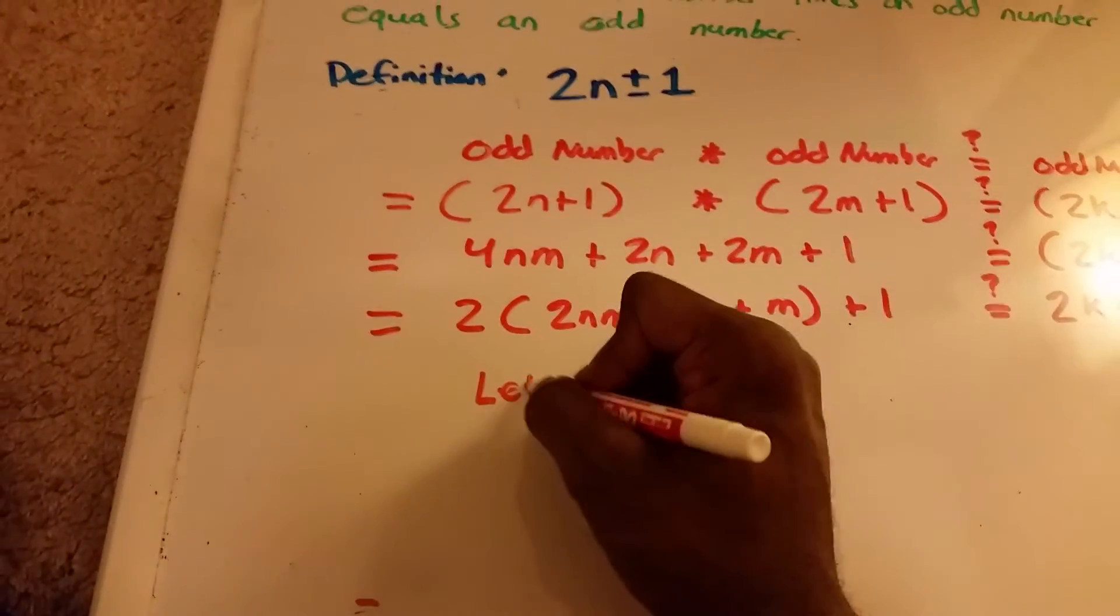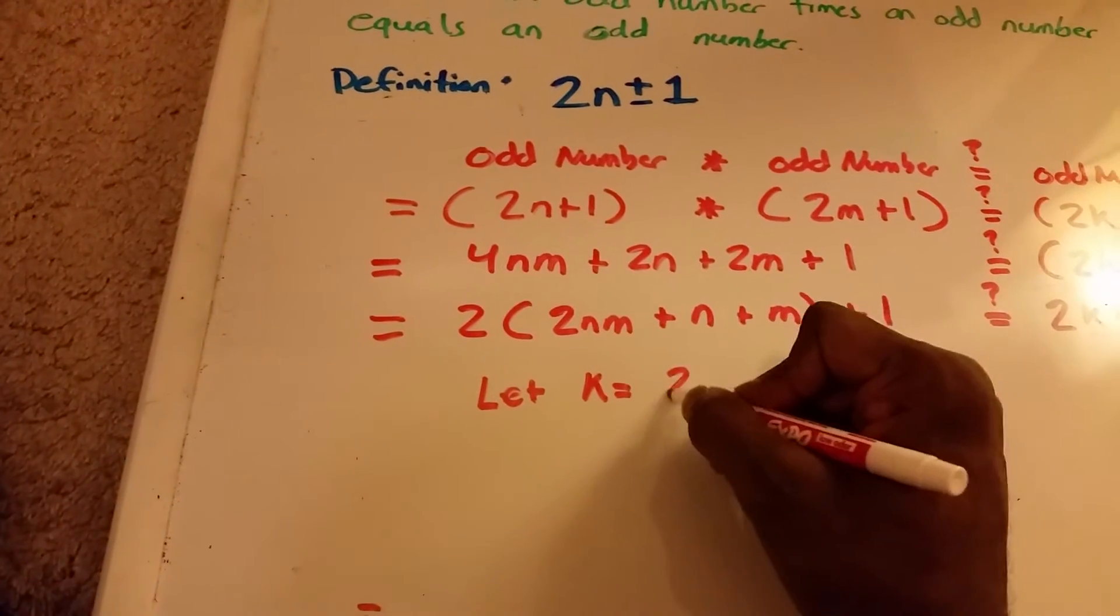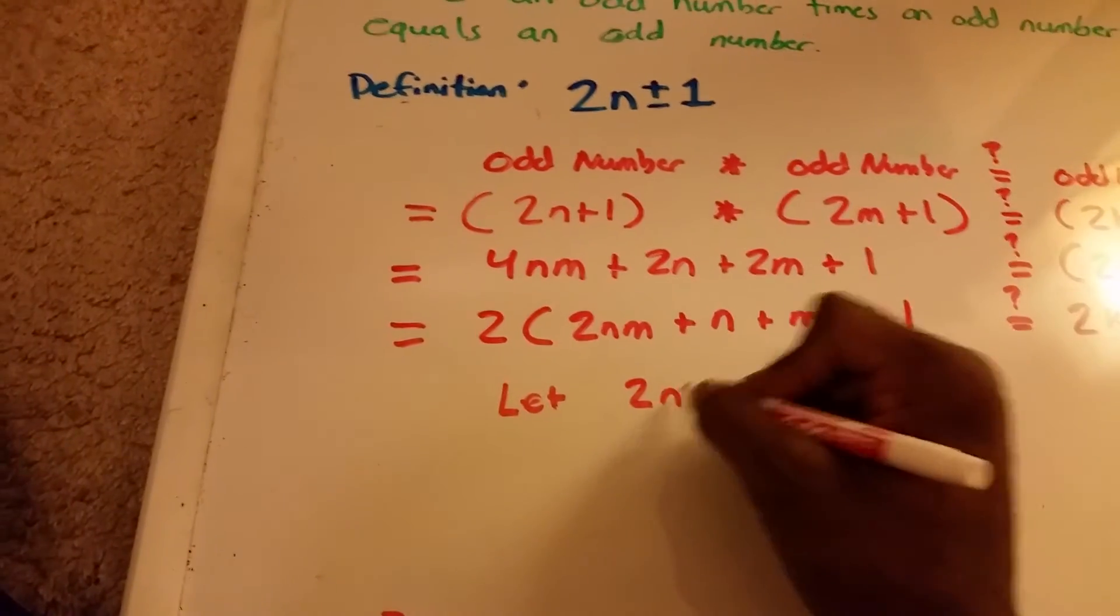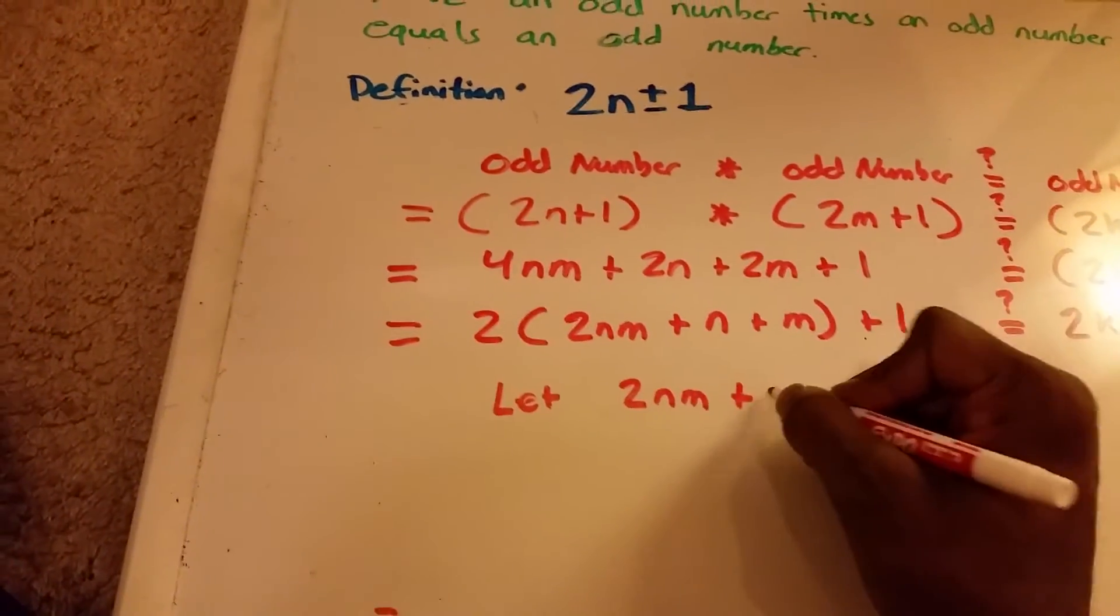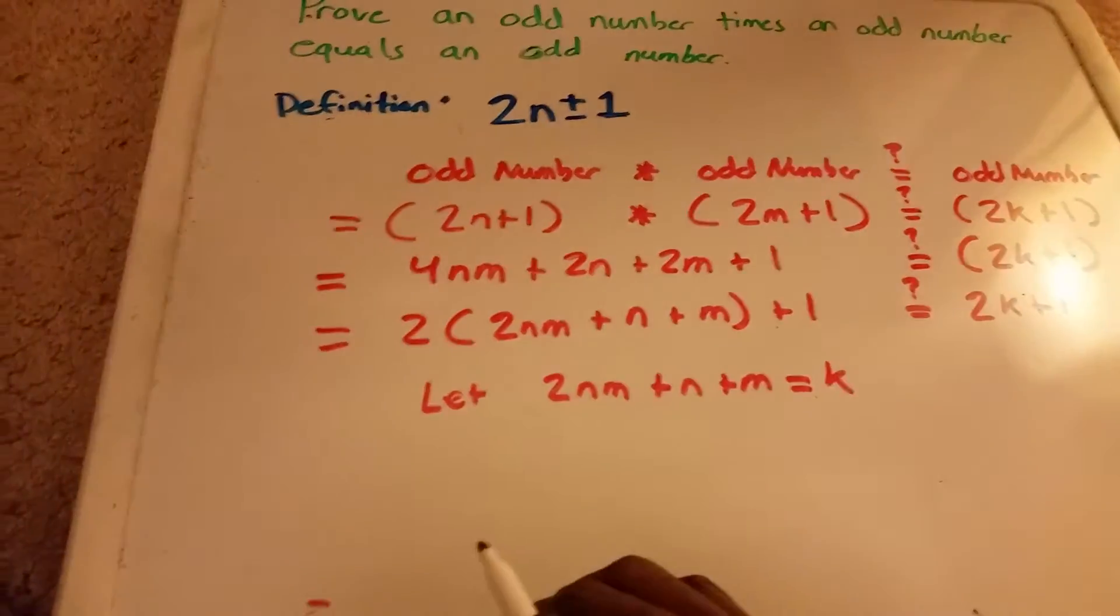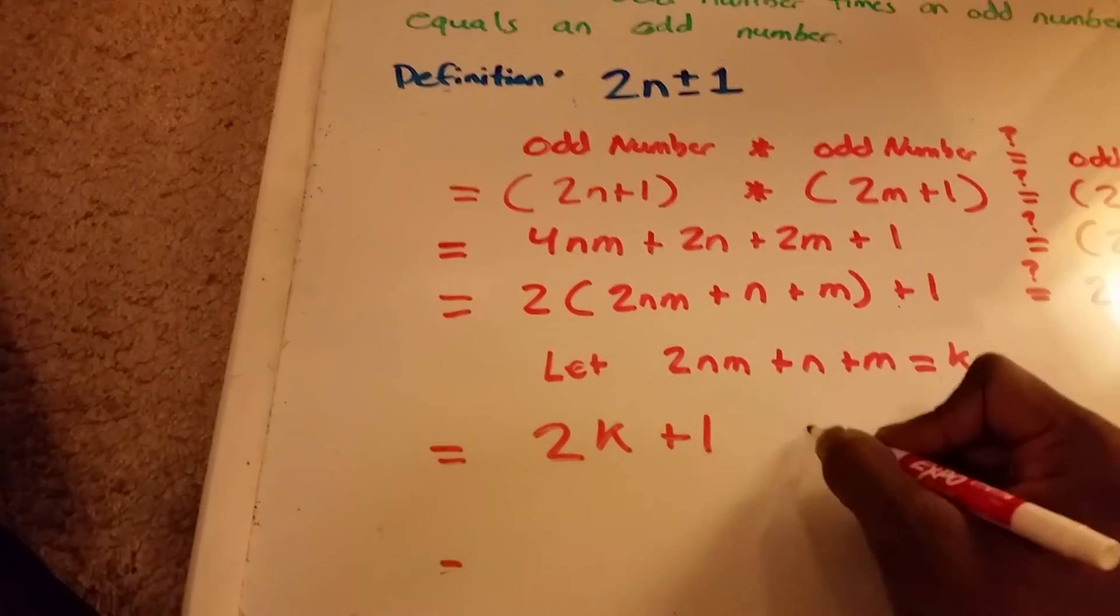We will let k equal, or actually not k. We will let 2n times m plus n plus m equal k. So now we get 2k plus 1.